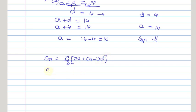S51 equals 51/2 of 2 times A, where A is 10, plus (n-1), that means 51 minus 1, into D which is 4. This is 51/2 of 20 plus 50 times 4, which is 200.